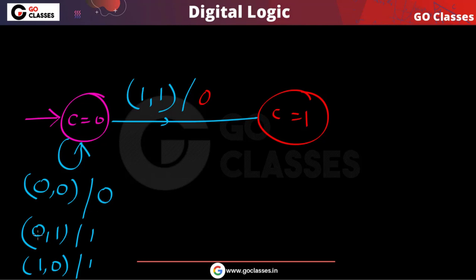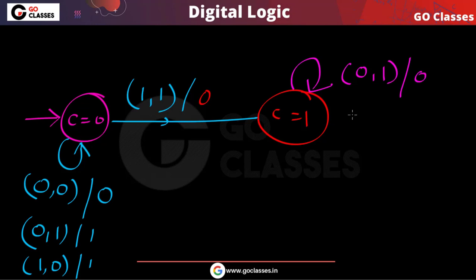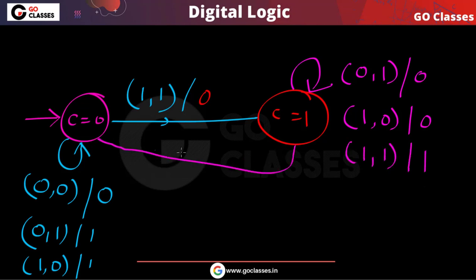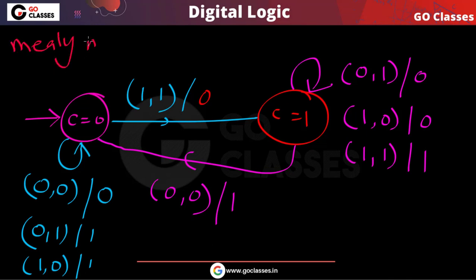So here is the Mealy machine. When carry is 0: input 0,0 → output 0; input 0,1 → output 1; input 1,0 → output 1; input 1,1 → output 0 and carry becomes 1. When carry is 1: input 0,1 → output 0; input 1,0 → output 0; input 1,1 → output 1 and carry stays 1; input 0,0 → output 1 and carry becomes 0. This is the Mealy machine for adding two integers.